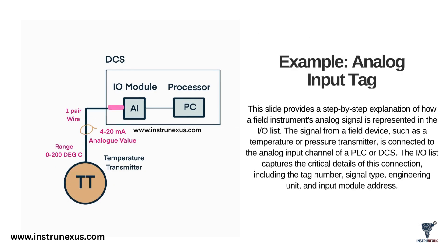Let's zoom in on a single tag type, the analog input (AI). A signal from a device like a temperature transmitter or a pressure transmitter is sent over a pair of wires to the analog input channel of the PLC or DCS. This signal is a continuous value, most commonly a 4 to 20 milliamp current, which represents the full range of the instrument's measurement. The IO List's job is to capture every critical detail about this one connection: the unique tag number, the signal type (4-20 milliamps), the engineering range (for example 0 to 200 degrees Celsius), and the exact input module address this wire pair connects to. Getting any of these details wrong will result in incorrect readings in the control system.